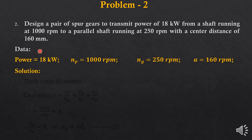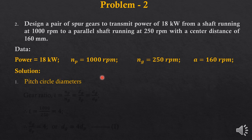The data we have is: power, NP, NG, and center distance A. In step number 1, since we do not know the pitch circle diameters nor the number of teeth, we will use the gear ratio and determine the pitch circle diameters first.